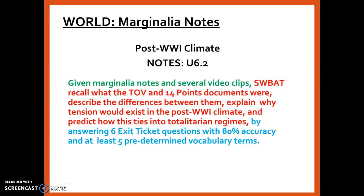Given marginalia notes and several video clips, students will be able to recall what the Treaty of Versailles and 14 Points documents were, describe the difference between them, explain why tension would exist in the post-World War I climate, and predict how this ties into totalitarian regimes by answering six exit ticket questions with 80% accuracy and using at least five predetermined vocabulary terms.